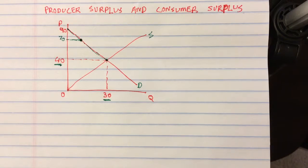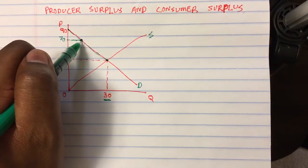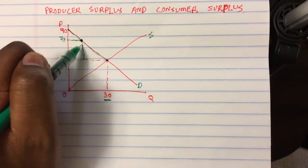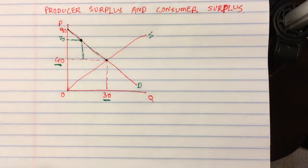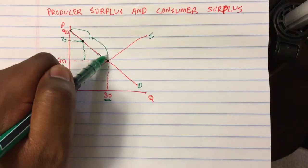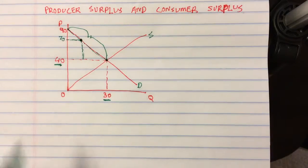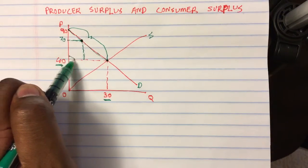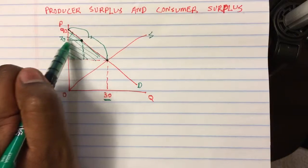So in effect, this person feels like he or she is $30 richer. So this is the surplus for that individual. Now for all the people who are purchasing the product, which represents all these individuals up till this point, the consumer surplus is therefore this area of this triangle.